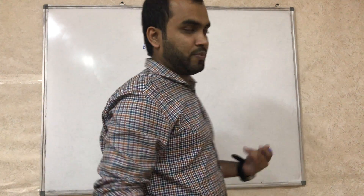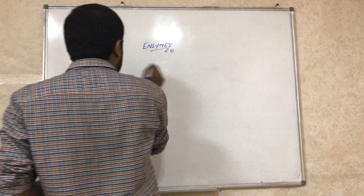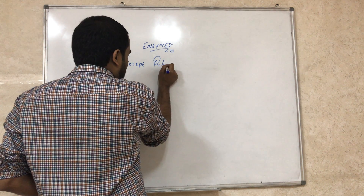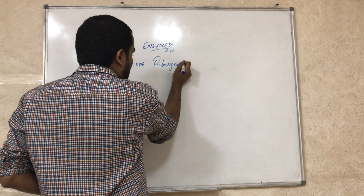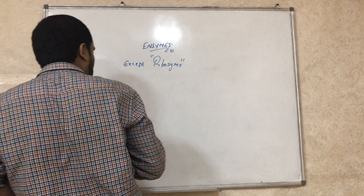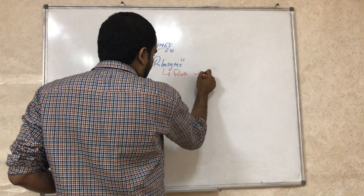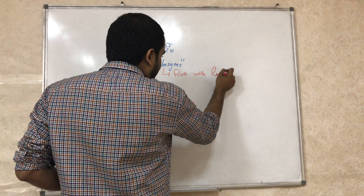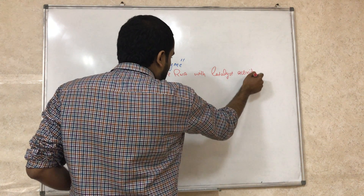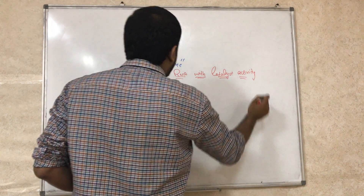All enzymes are protein — you have been hearing this from lower classes. But all enzymes are protein except there is an enzyme called ribozyme. Ribozymes are RNA; they are not protein. They are RNA with catalytic activity.